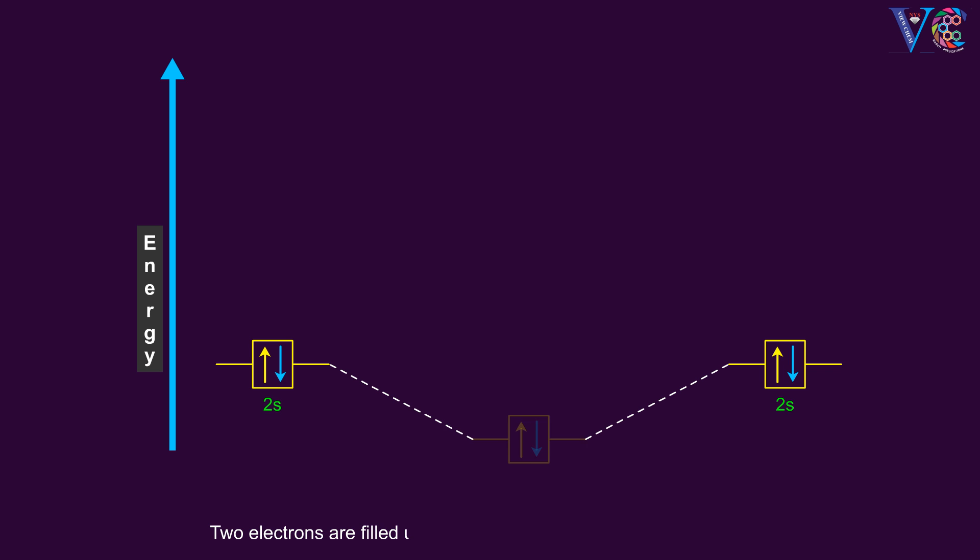2 electrons are filled up in the σ2s bonding molecular orbital. Next, 2 electrons are filled up in the σ2s anti-bonding molecular orbital.